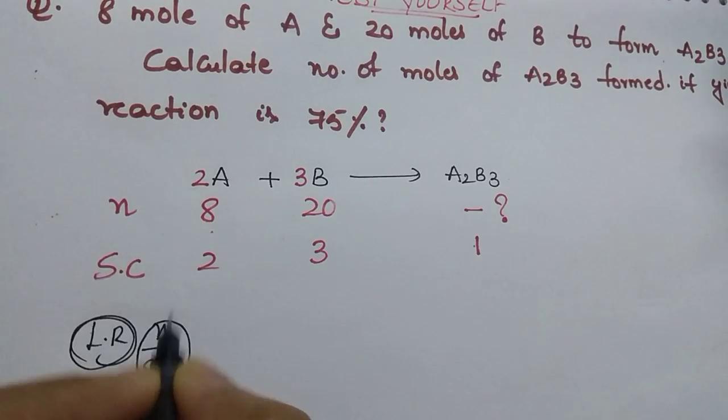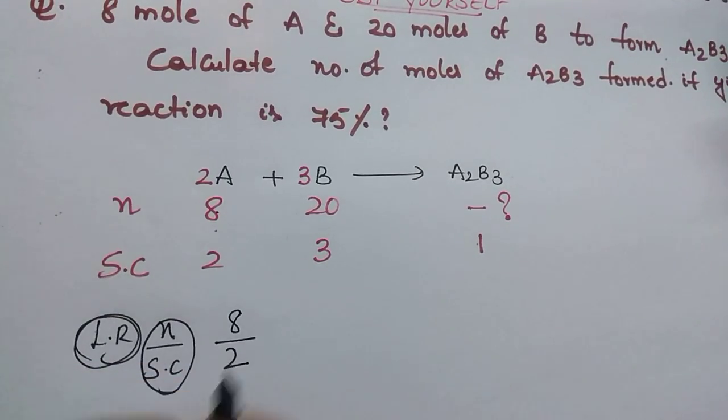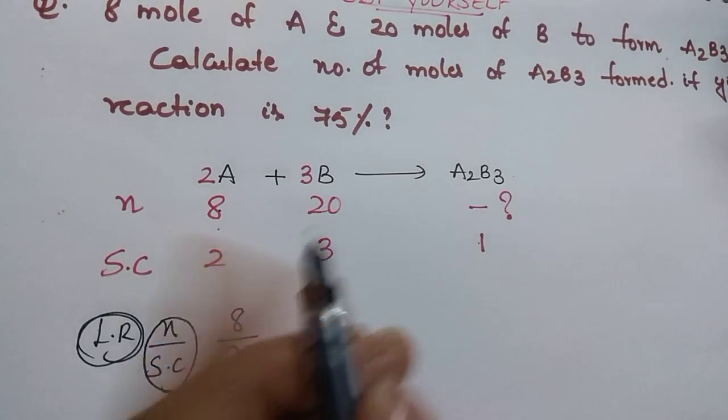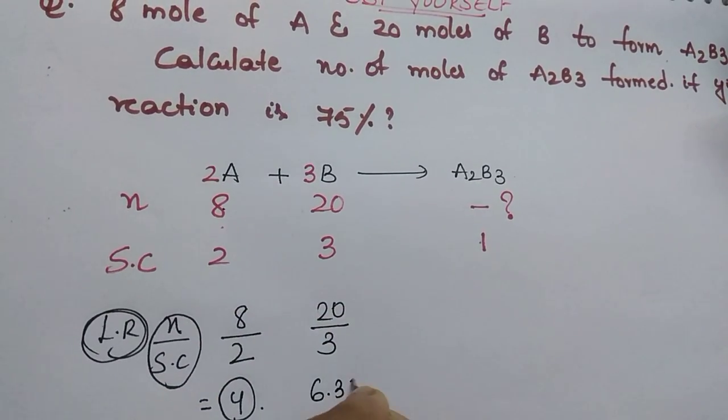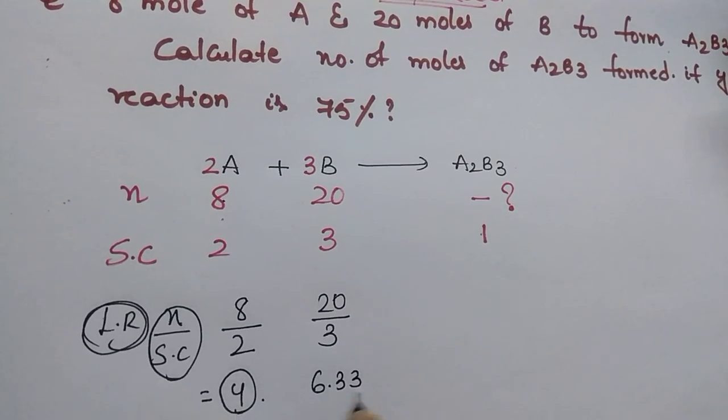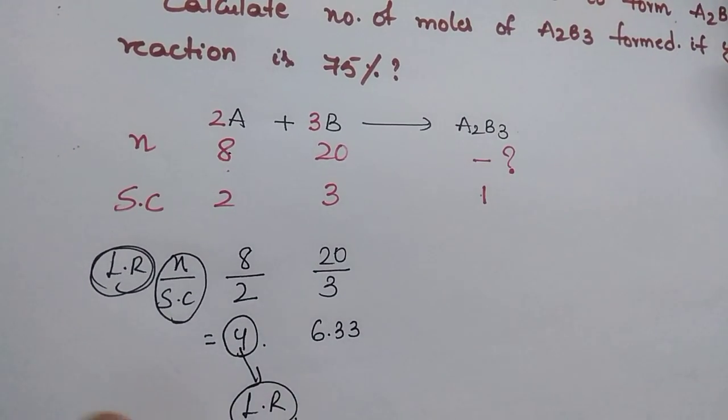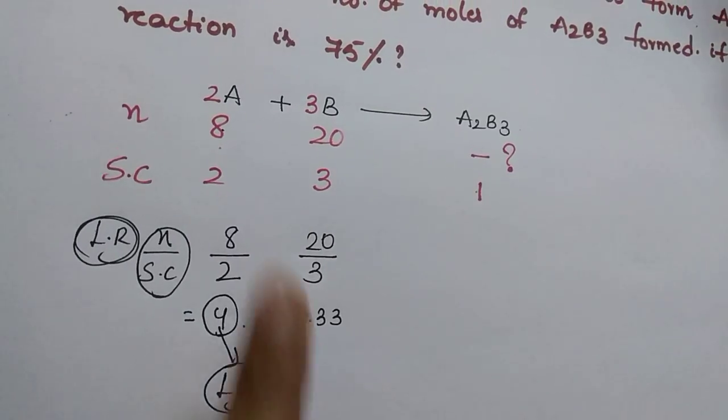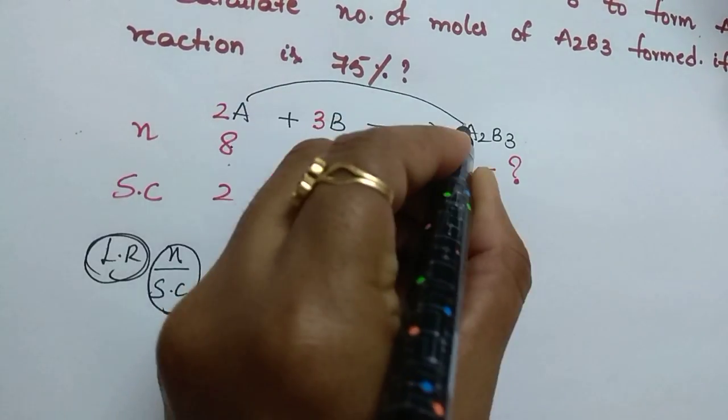Number of moles is 8 divided by stoichiometric coefficient 2, which gives 4. Here, 20 divided by 3 gives 6.3. Which is the lowest? 4. That is the limiting reagent. So A is the limiting reagent.